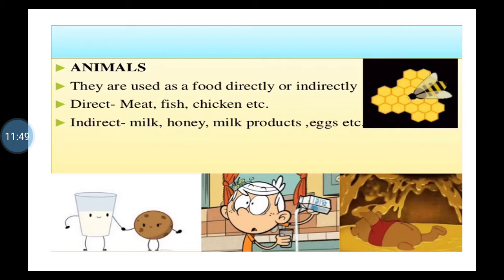From animal source, many people are non-vegetarian, and many animal source food articles are also used as food, directly or indirectly. Directly, for example: meat, fish, and chicken. Indirectly, for example: milk, honey, milk products, and eggs. You must know the examples of food articles which are obtained from animal source.